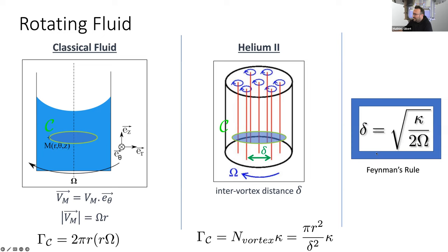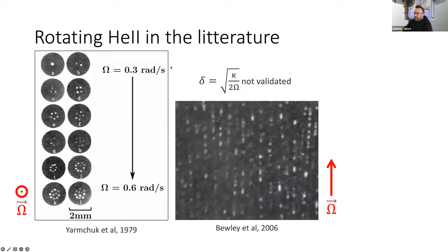If you equate this and that, you get what is called in the community the Feynman rule. This rule is very nice because it relates directly the inter-vortex spacing to the rotation frequency of your container and the quantum of circulation of vortices. It's a relatively low-level rule, a fundamental rule. And this is what we've been hunting for quite some time. This has already been measured experimentally, first by the historical experiment run by Yarmchuk in the group of Packard in the 80s.